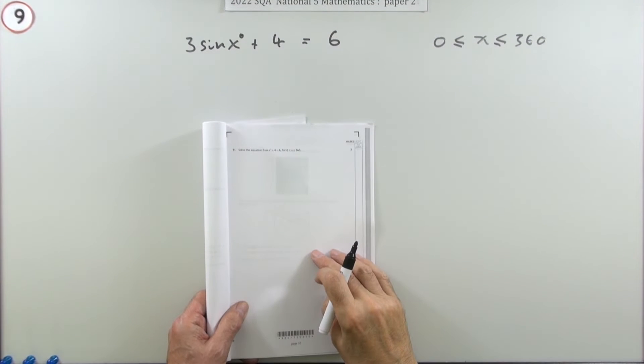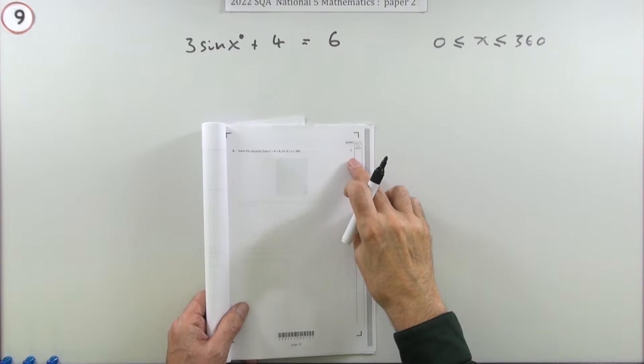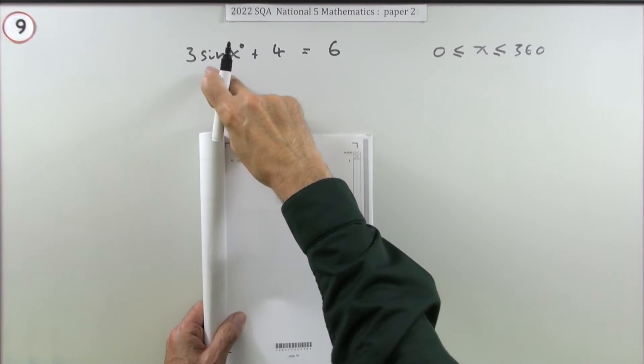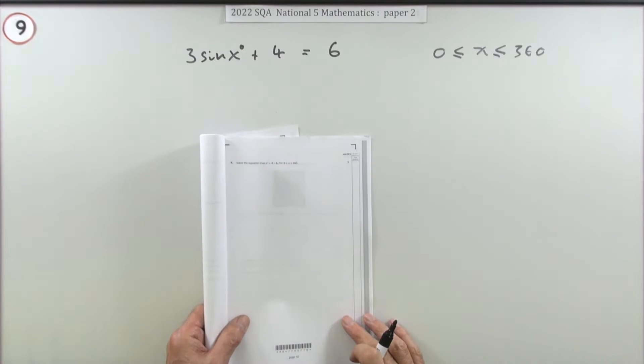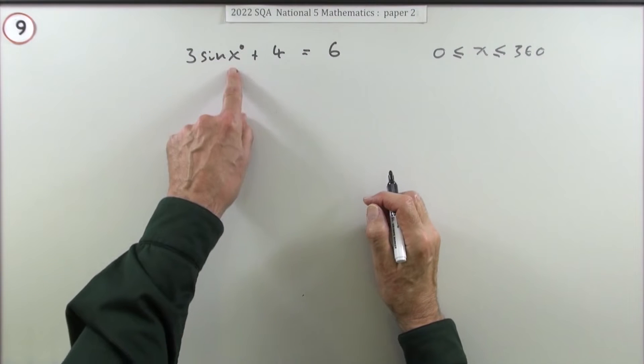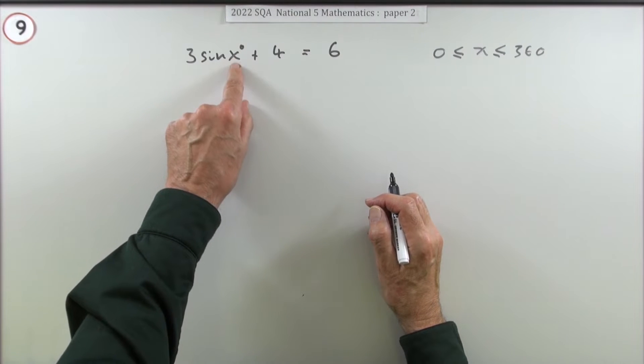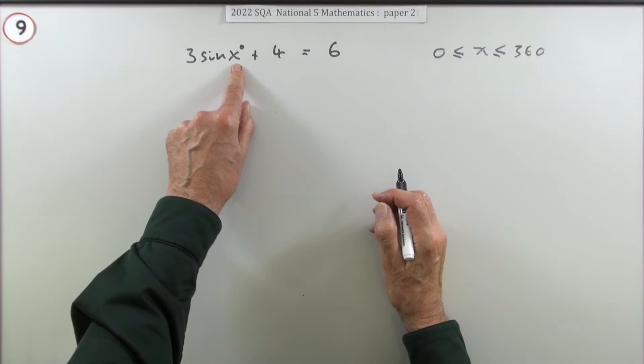Number nine from the 2022 National 5 Paper 2 is a question for solving an equation involving a trigonometrical expression, sine in this case. You still solve it exactly the same way - you want to get down to x, so you're going to have to get rid of three things in the correct order.